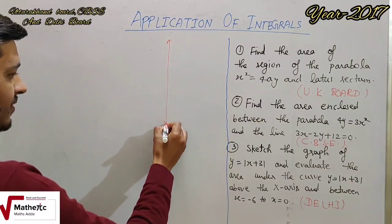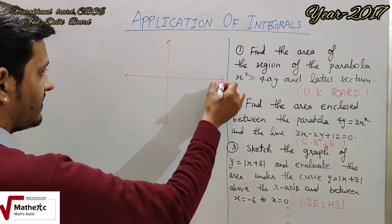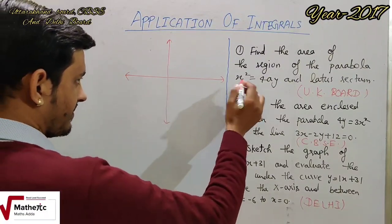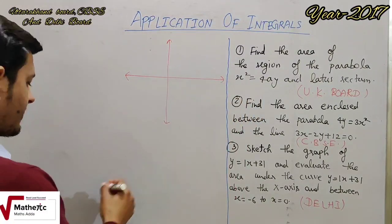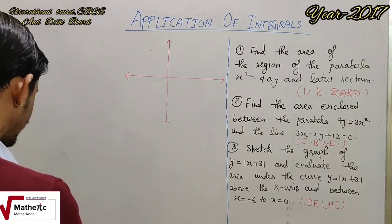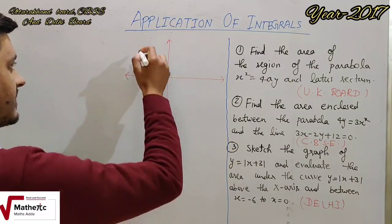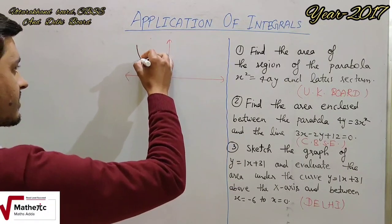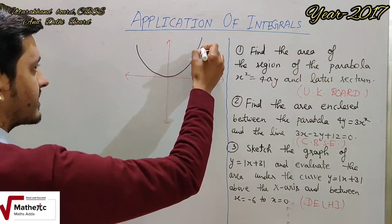Let's start with the diagram — we have a diagram form. Let's start with the Parabola. We have a Parabola: x² = 4ay.